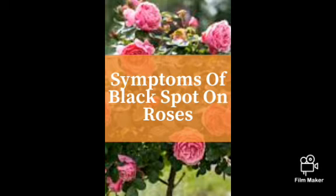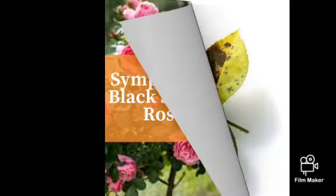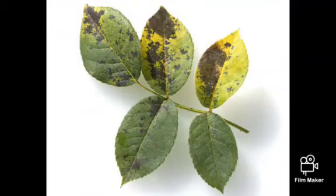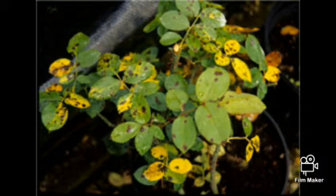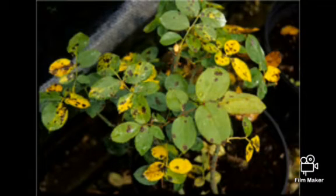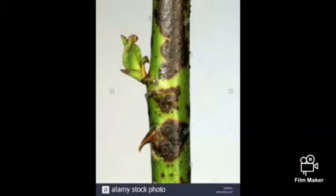Symptoms of black spot on roses: Black spot will look like circular black spots on leaves. The outer margin of the black circle is usually surrounded by a ring of yellow. Spots begin on the lower leaves and move upward. Severely affected leaves often fall off the plant, and if left unchecked, the entire plant can deteriorate.